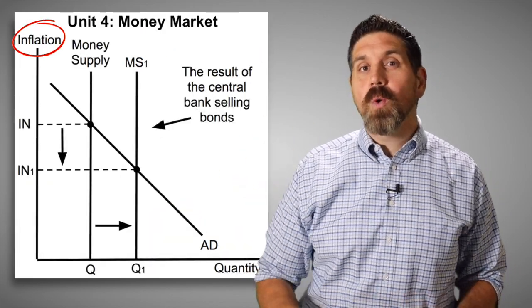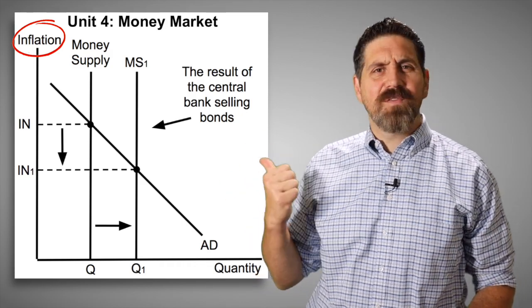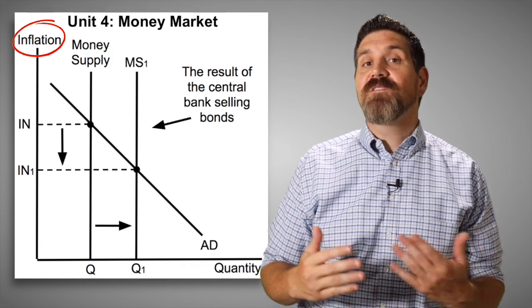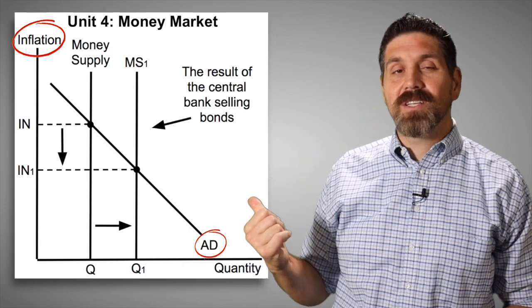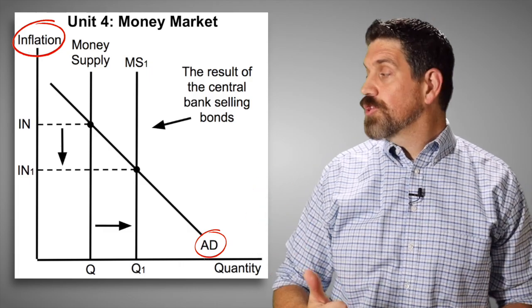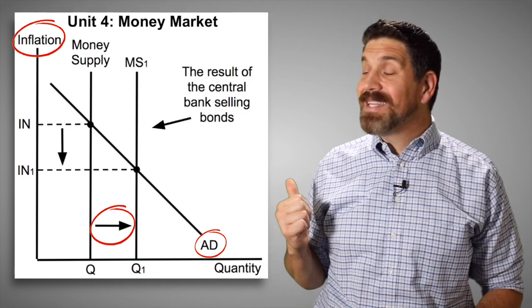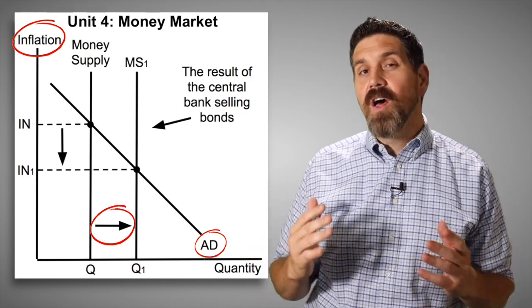Now the next one, this is moving on to unit four, showing the money market. This one has three things wrong. The first one up here, it says inflation. It's supposed to be the nominal interest rate because we're looking at how the money supply affects interest rates. And we're looking at the supply and demand for money. So where it says aggregate demand right here, that's wrong. That should just show the money demand curve. Also, it talks about the central bank selling bonds. That would decrease the money supply. And this shows an increase in money supply. So it's shifting the wrong direction.